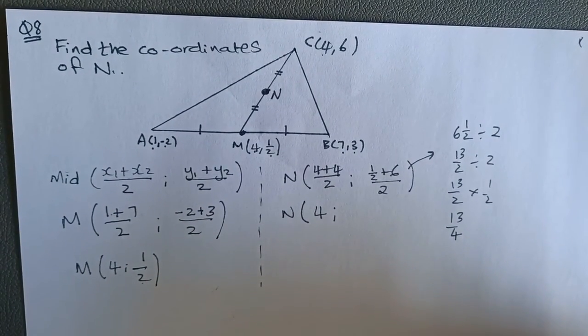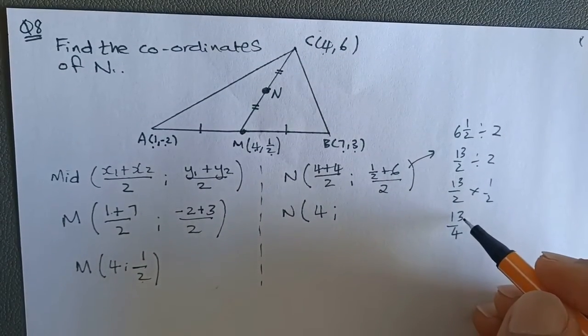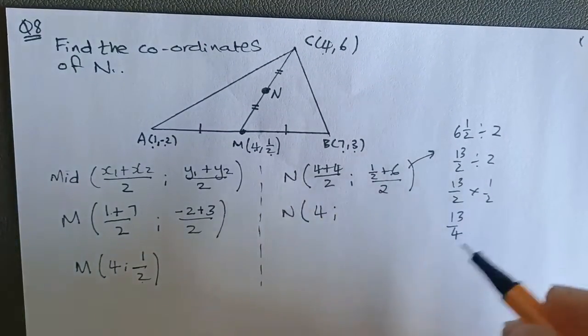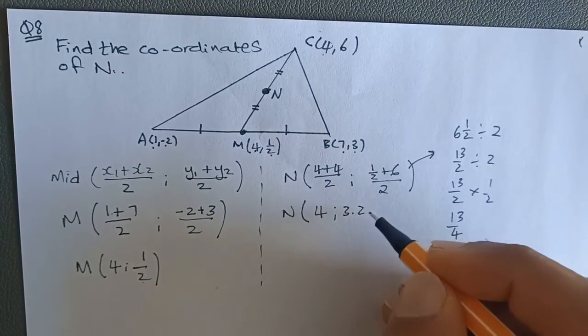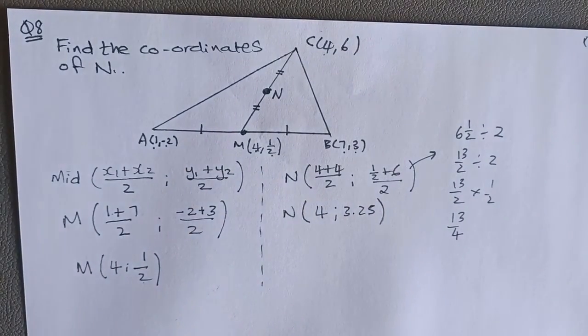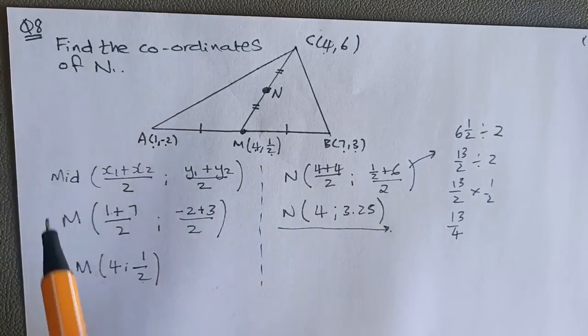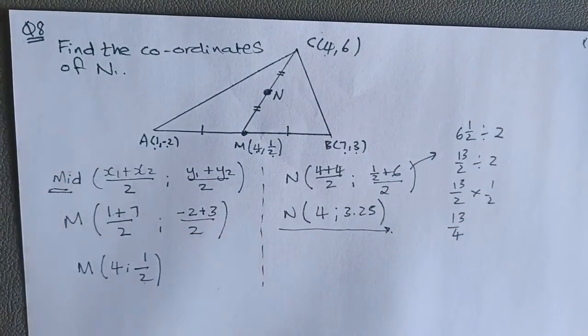So you can see quite clearly that 4 goes into 13 three times, so 3.25 looks correct. And then I found the coordinates of N using the midpoint formula, part of coordinate geometry.